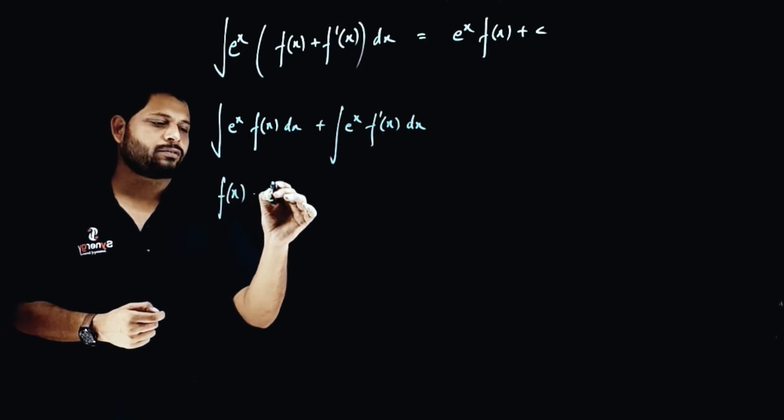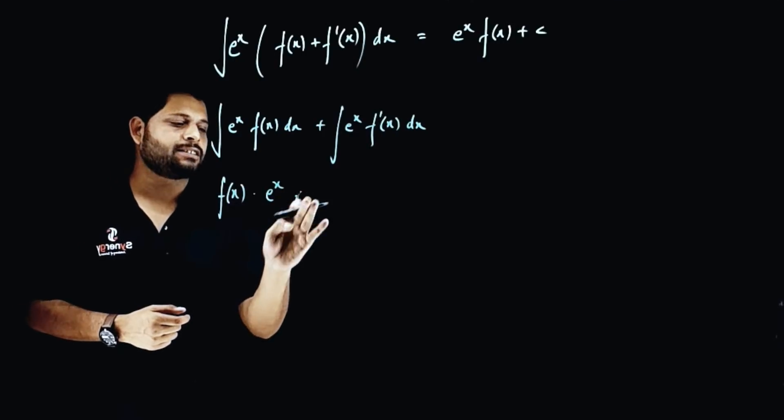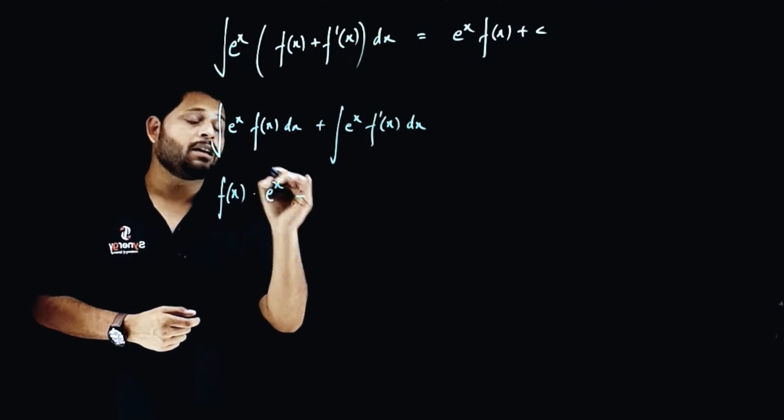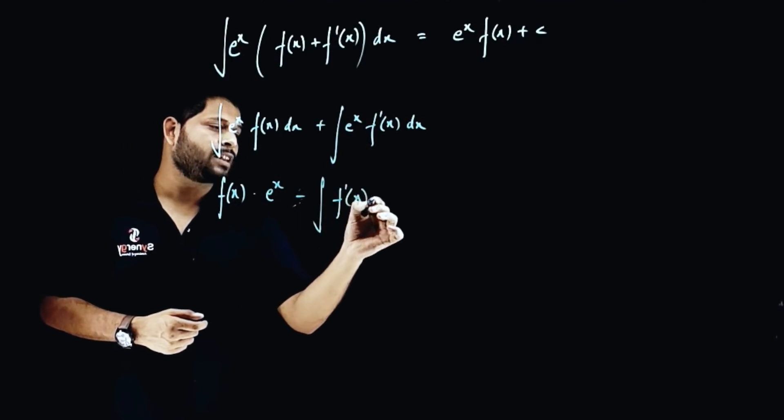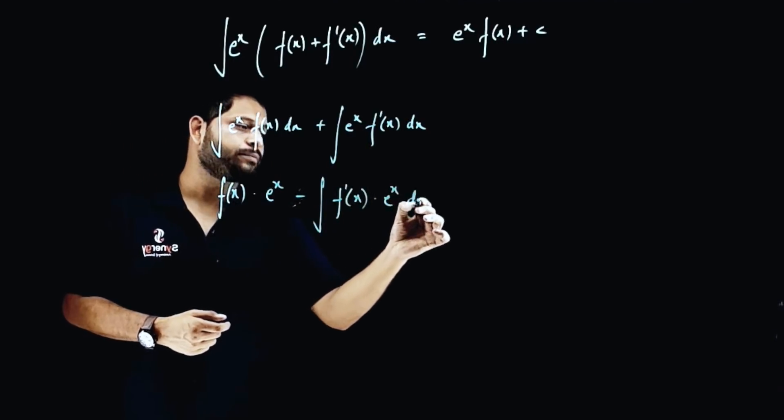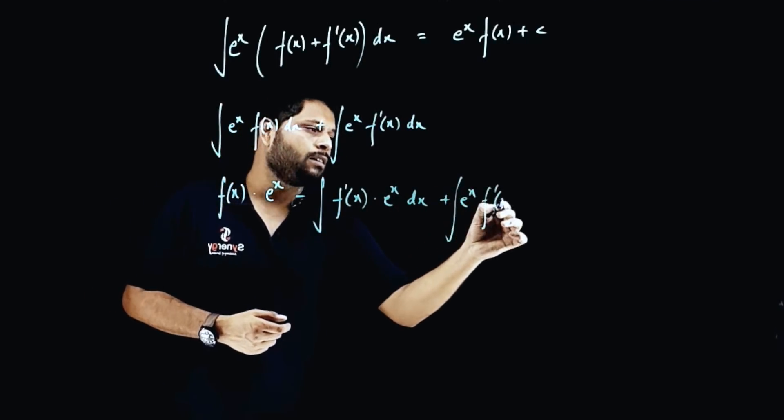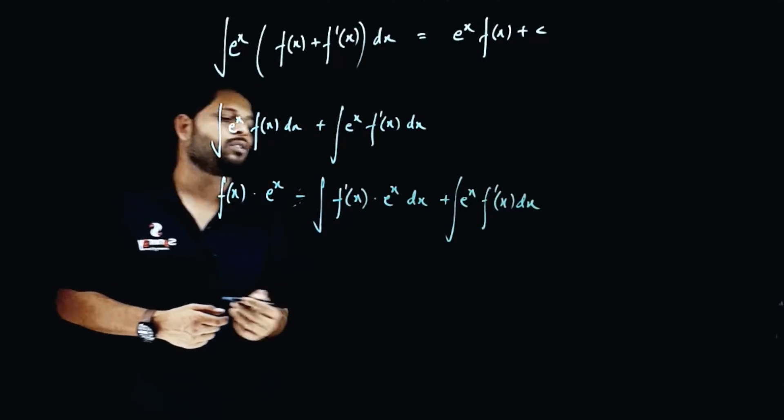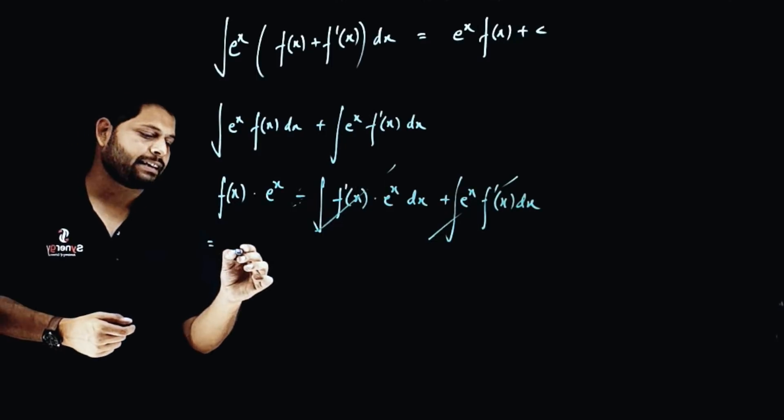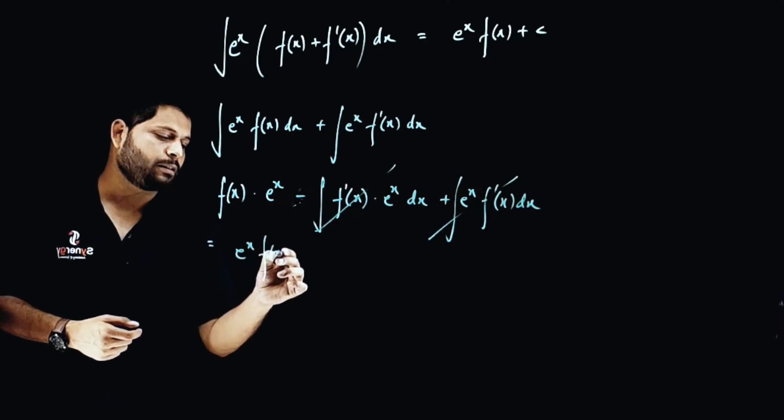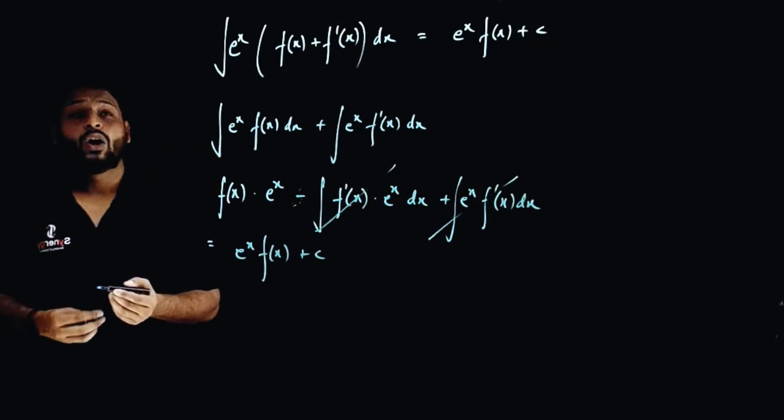Minus integral of differentiation of the first and integration of the second. If you see, this gets deleted and the answer for the same is e^x·f(x) + c. So this is how your formula is created.